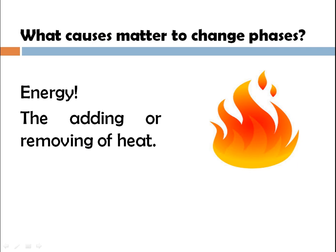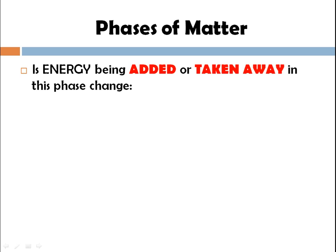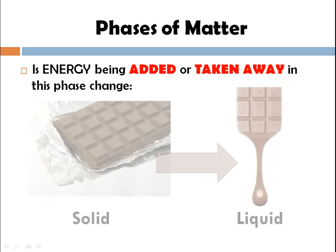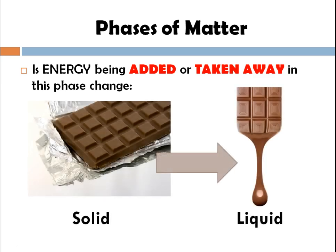What happens when you add energy to matter? It converts into different phases. Addition and removal of heat from matter affects its phases. Energy is either added or taken away during a phase change.